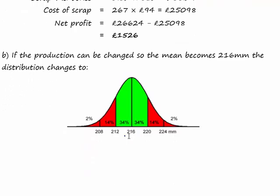So now the mean is 216. The design spec remains the same. So 216 plus 4 is 220, and 216 minus 4 is 212. Which means that we've now got 68% of the population are good parts, and therefore 32% are scrap.